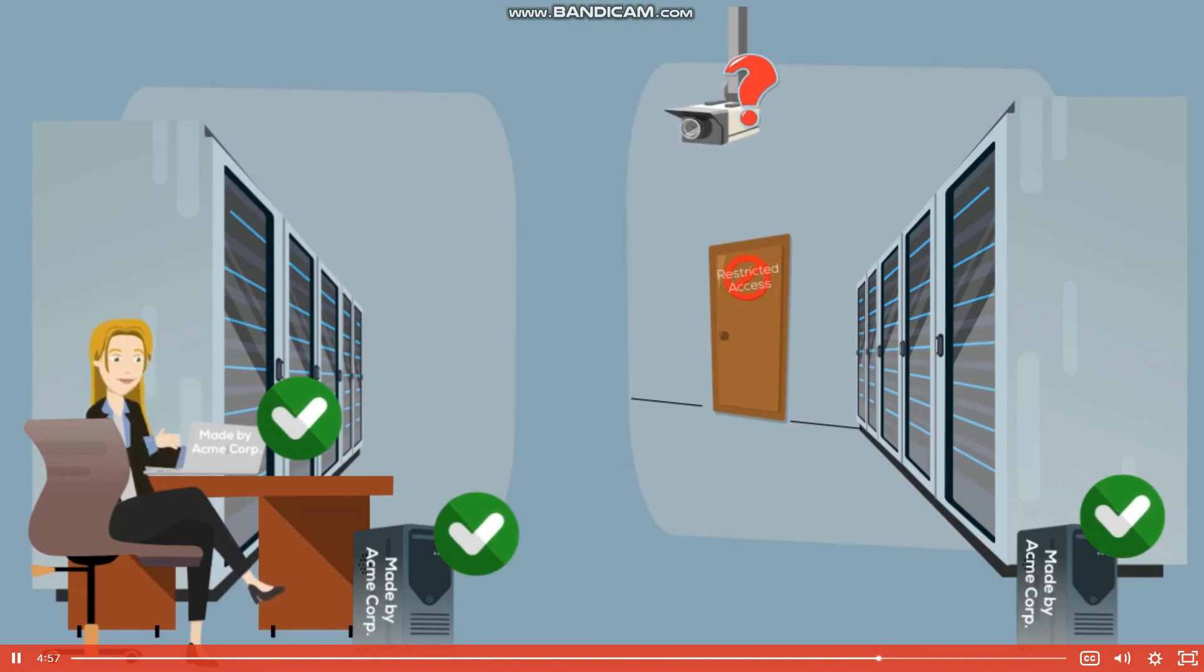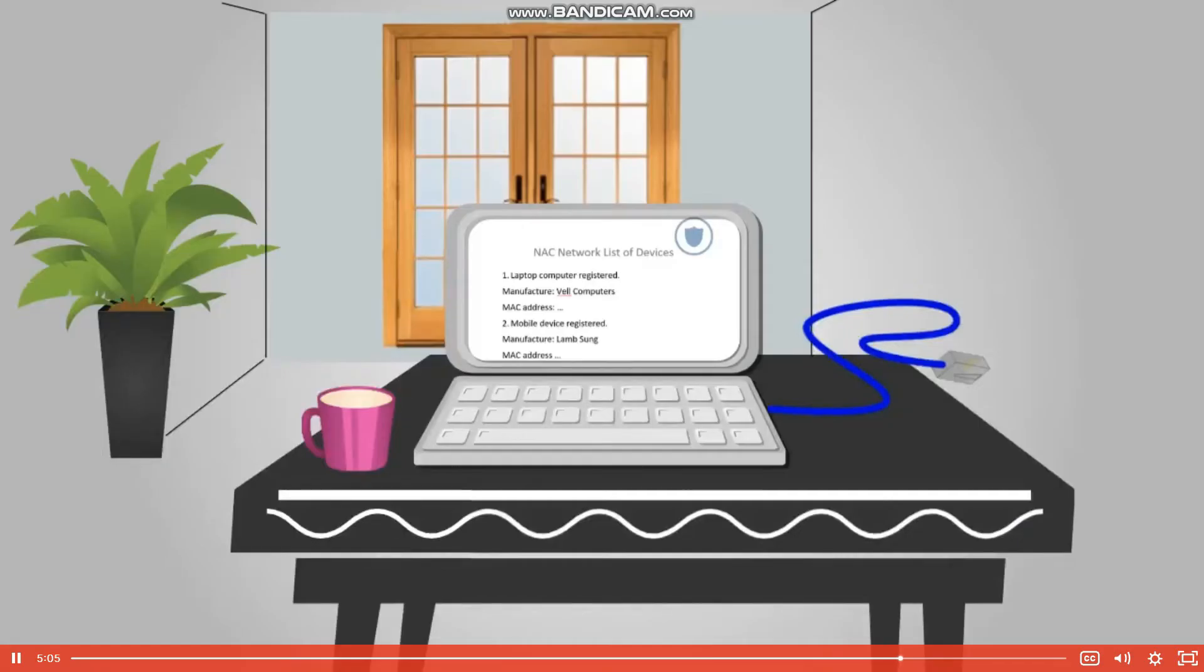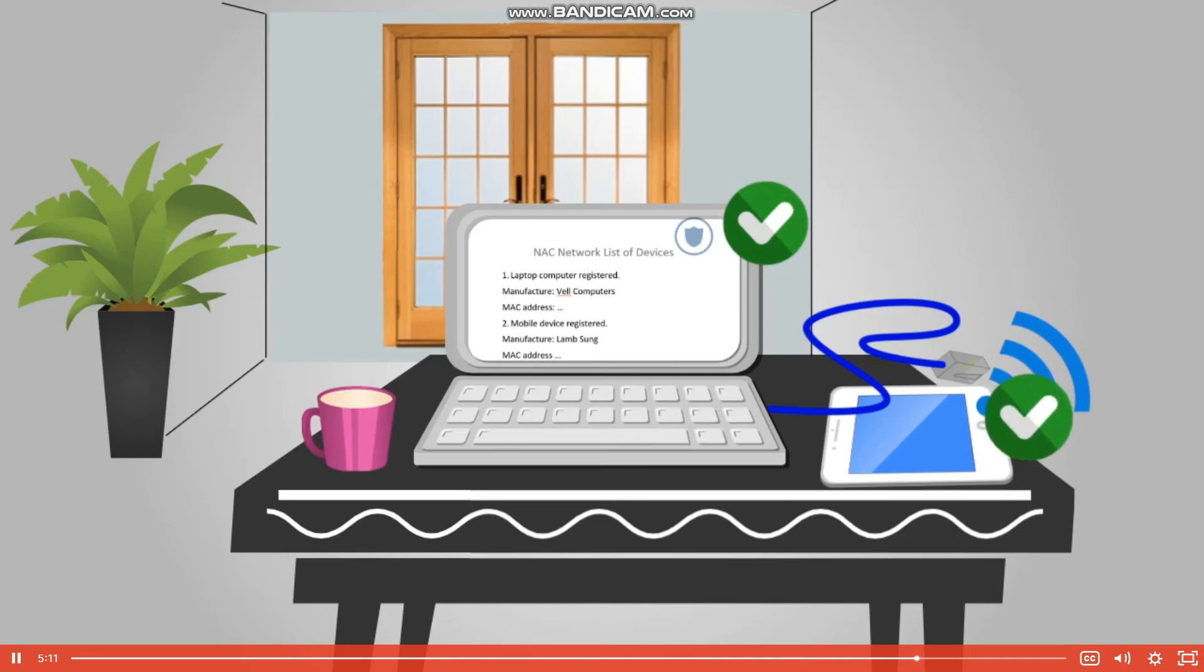Ideally, you want a NAC solution that has complete visibility into the network to identify all the devices and all the users. This means that it must be effective in both wireless LANs and LANs. It must interoperate with a multiplicity of vendor products to a degree that it can communicate and profile the device, and, most importantly, that it can profile headless devices that are not equipped with an agent.